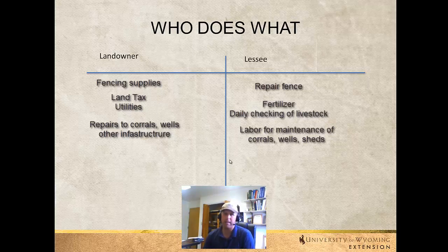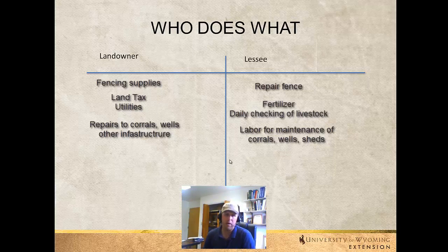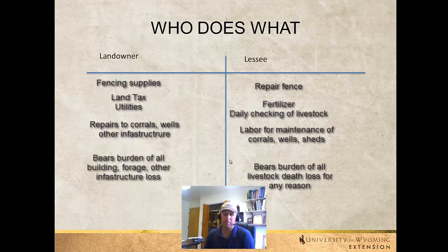Maybe the lessee is responsible for easy maintenance — for instance, fixing a corral if it needs repair. It's important to go through all of this up front. If it's a new lease agreement, things will certainly come up as you go through the year, so sitting down and talking about who handles those is also important. Another component is who's responsible for what types of disasters or damages — for example, livestock death losses due to poisonous plants or natural disasters like lightning. Spelling those things out clearly means that if something does happen, it's clear who will bear the financial burden.